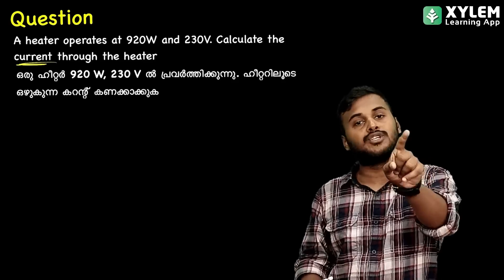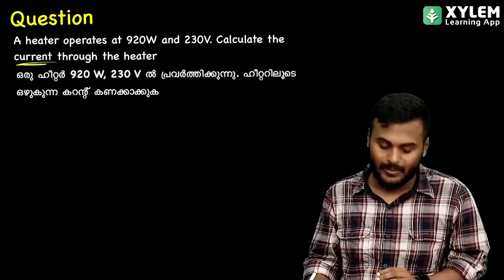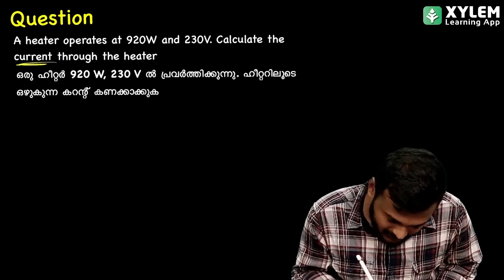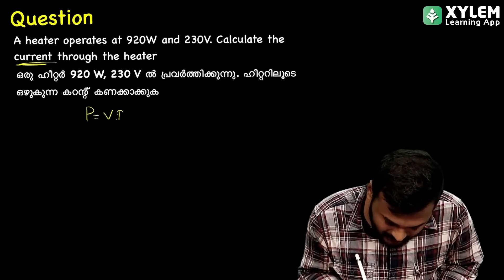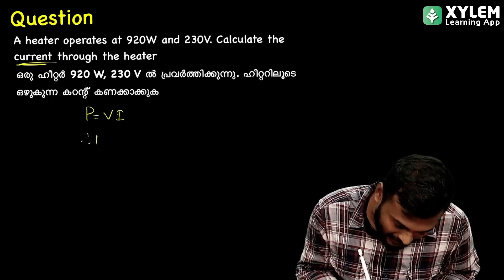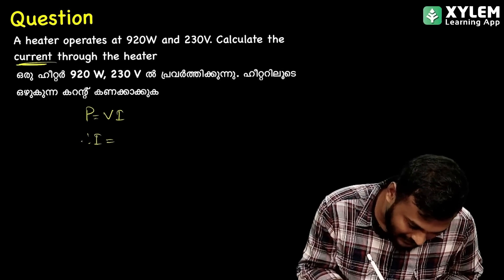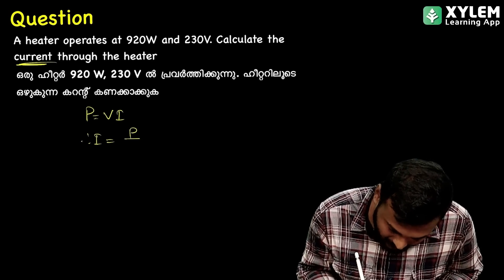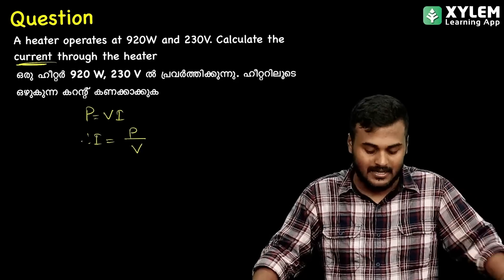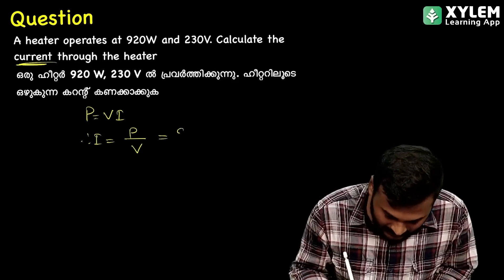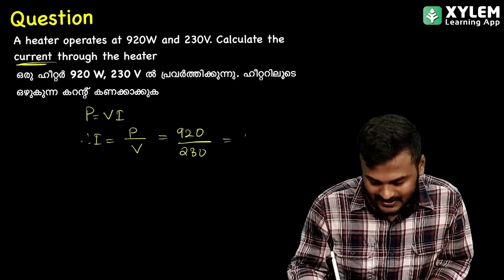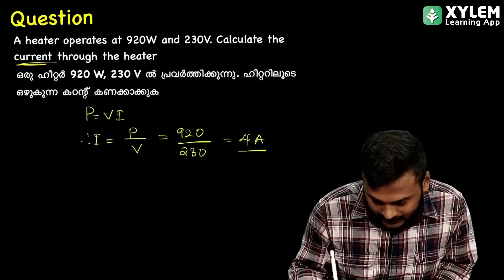The equation is P equal to. We call it. So we have to find the current. I is equal to P divided by V. So I is equal to P divided by V. The answer is 4A.